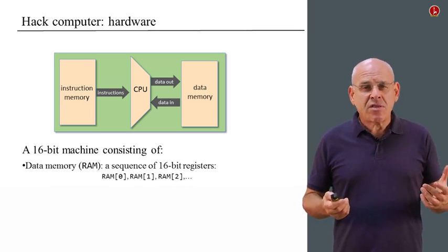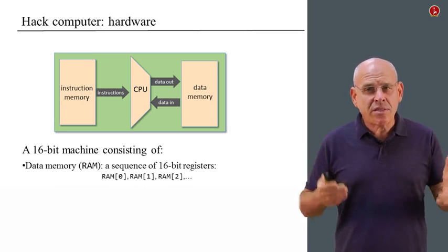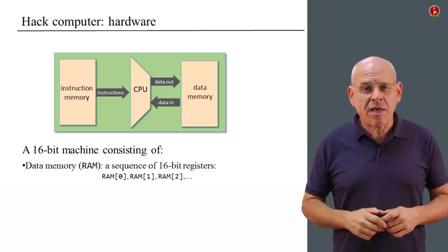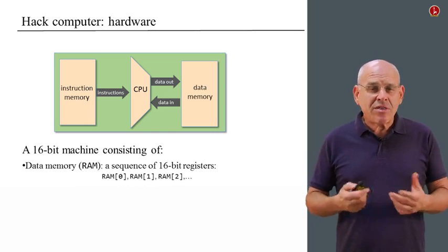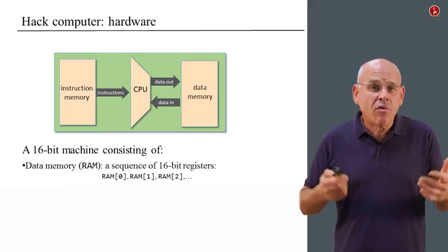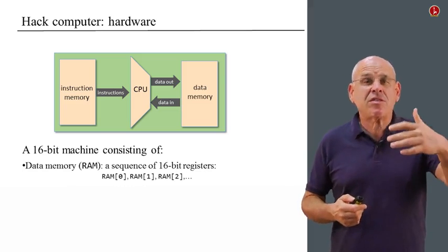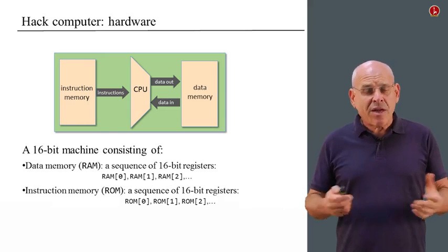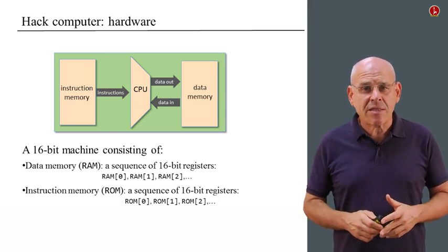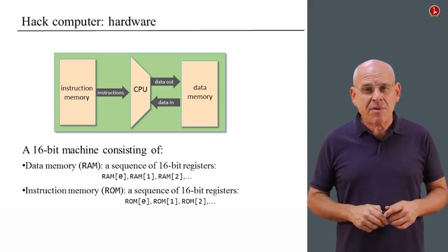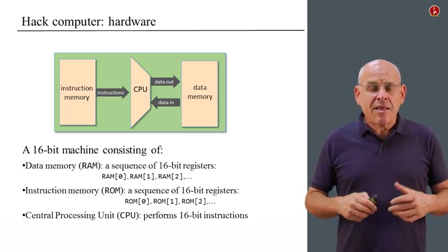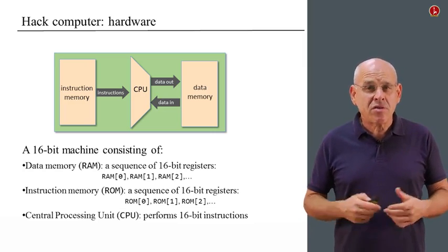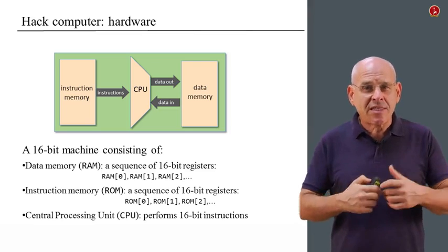The computer is going to consist of a data memory, which is a sequence of 16-bit values. And each of these values is going to be stored in a memory register. And these registers are numbered for convenience. We can think about them as register 0, register 1, all the way to as many registers as we have in the data memory. The instruction memory is a separate memory space. That is also a sequence of 16-bit values. And the CPU is a device which is capable of manipulating 16-bit values using mostly the ALU which resides inside the CPU.